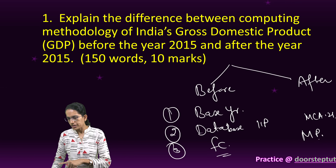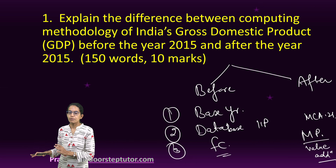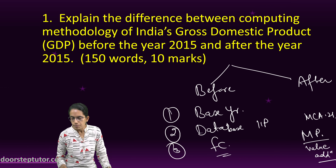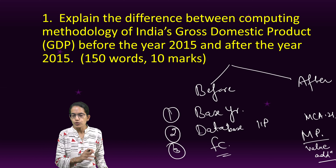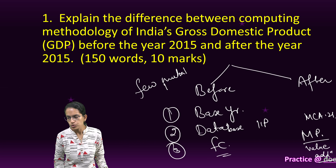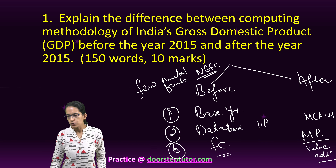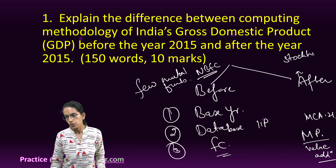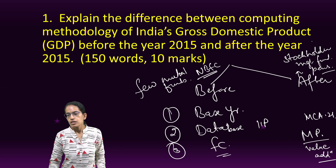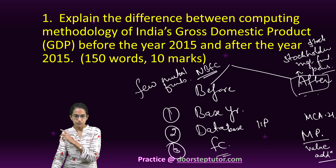However, the new methodology has focused on value addition in agriculture, and as a result the GDP figure has increased tremendously. In the previous calculation before 2015, only a few mutual funds and non-banking financial companies were included. After 2015, all stockholders, management funds, pension funds, and stock exchanges are all part of the GDP computation.